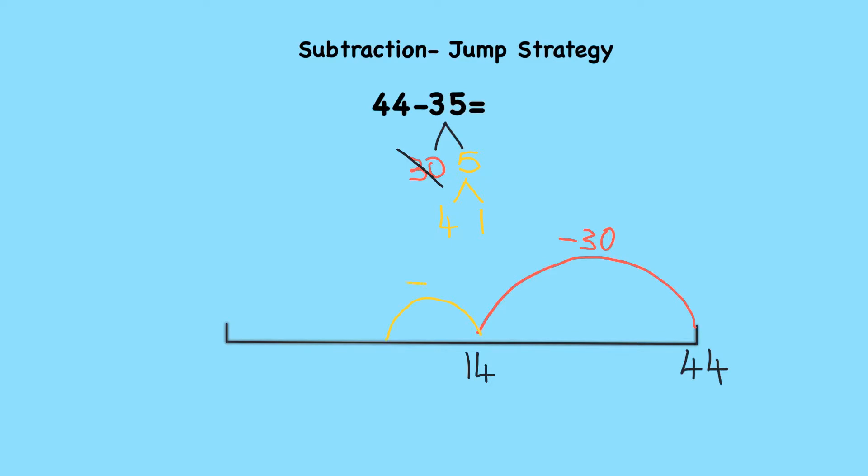I'm doing a jump of 4. Notice that my jump of 4 isn't as large as my big jump of 30. So if I take 4 from 14, I'm left with 10 — that's a nice round number.